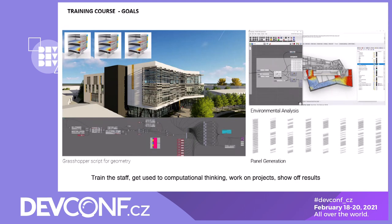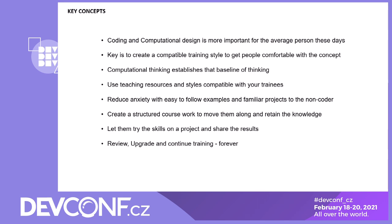The key concepts in review: coding and computational design is more important for the average person these days, including architects. Everybody needs to learn a little bit of computational thinking and coding to get ahead and make a difference in what they're trying to do. But you have to make a training style to get people comfortable with the concept — not everybody's just going to sit down and learn Python or JavaScript. Computational thinking establishes the baseline so that people get comfortable with how you would need to talk to a computer. Use resources compatible with your trainees, reduce the anxiety, and give them examples familiar to a non-coder. Create structured coursework, let them try the skills on a project, share the results, review, upgrade, and continue training indefinitely.